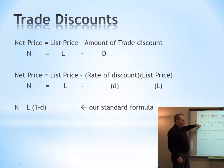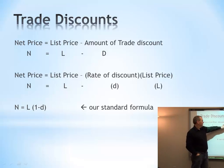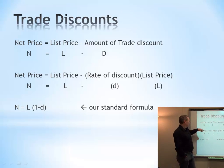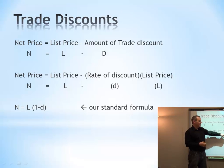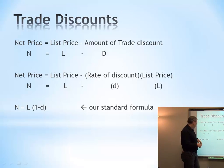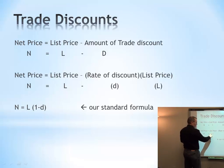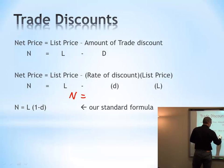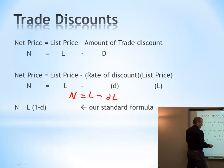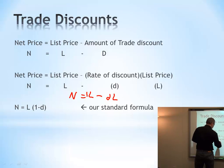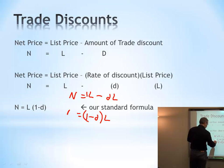Our formula: the net price N, which is the price we pay, equals the list price L minus the amount of a trade discount. More precisely, the discount amount is the discount rate D times the list price L. So our standard formula is N = L(1 - D). We start with N = L - DL, then factor out L to get N = L(1 - D). That's our standard formula.